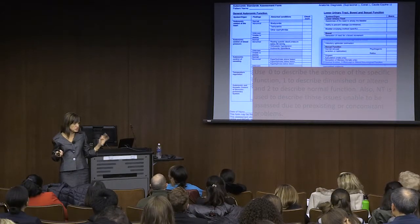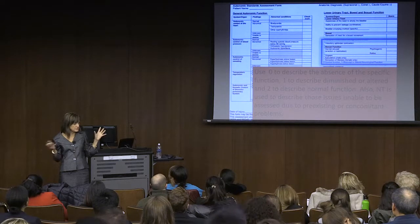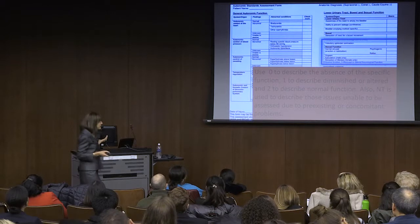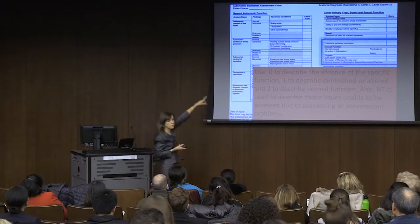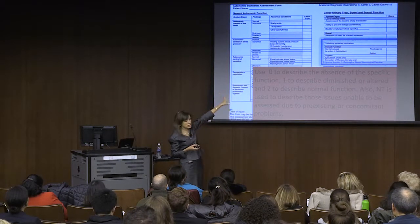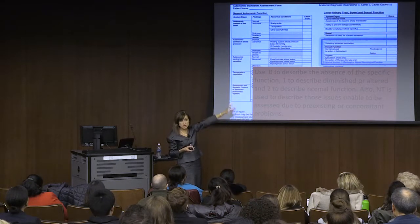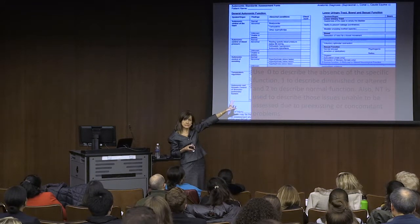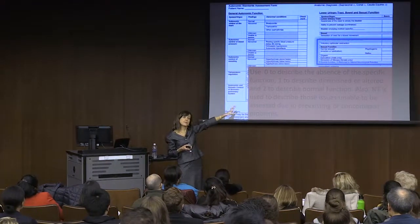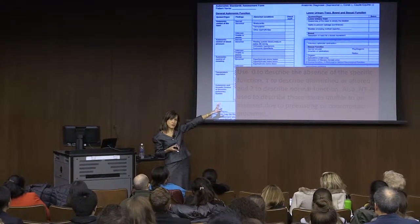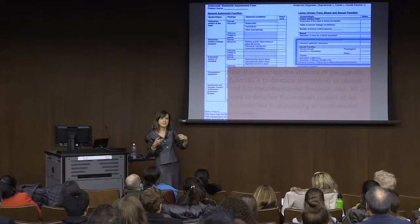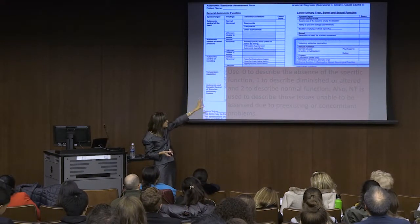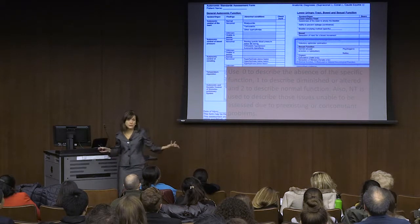Ideally, we use this form alongside sections for urinary tract and bowel function, so we have all the sacral autonomic function together. We are revising this form now, and I would like it to go along with the international standards form so we have all this information together, because being a separate form makes people use it less. But all that information is important to the person—we all want to get better.